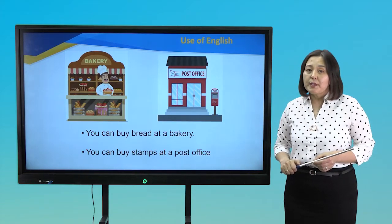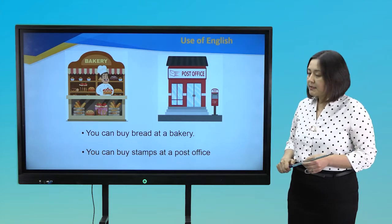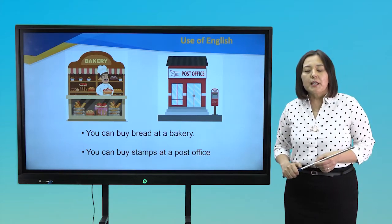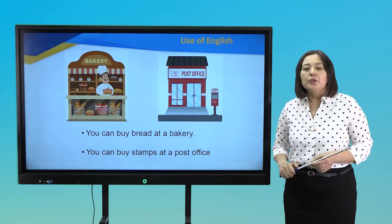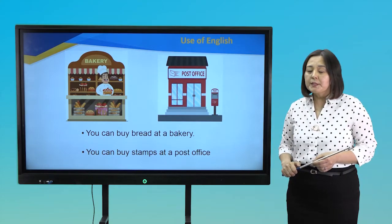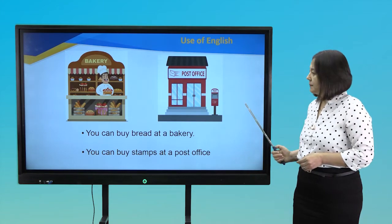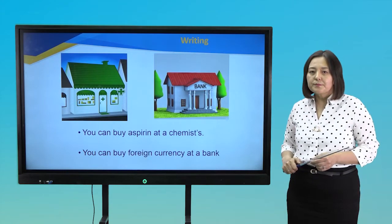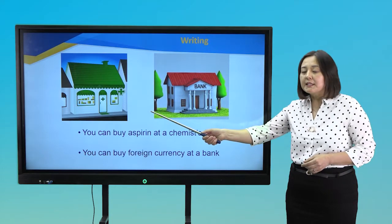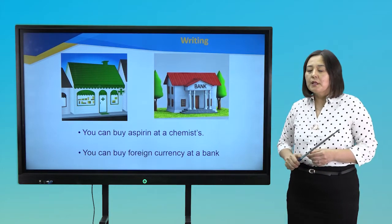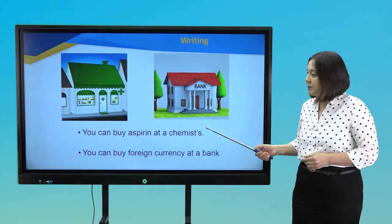You know all the new words — but why not use them? So let's make sentences. You can buy bread at a bakery. You can buy stamps at a post office. You can buy aspirin at a chemist's. You can buy foreign currency at a bank.